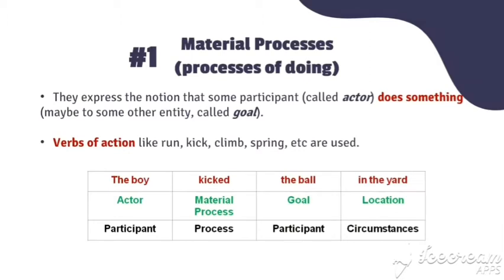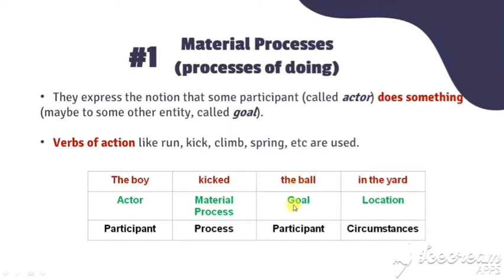The first is material process, or process of doing. They express the notion that some participant, called actor, does something to another entity called goal. Material process uses verbs of action such as run, kick, climb, spring, etc. For example: 'The boy kicked the ball in the yard.' The boy is the actor, kick is the material process, the ball is the goal, and in the yard is a location circumstance.